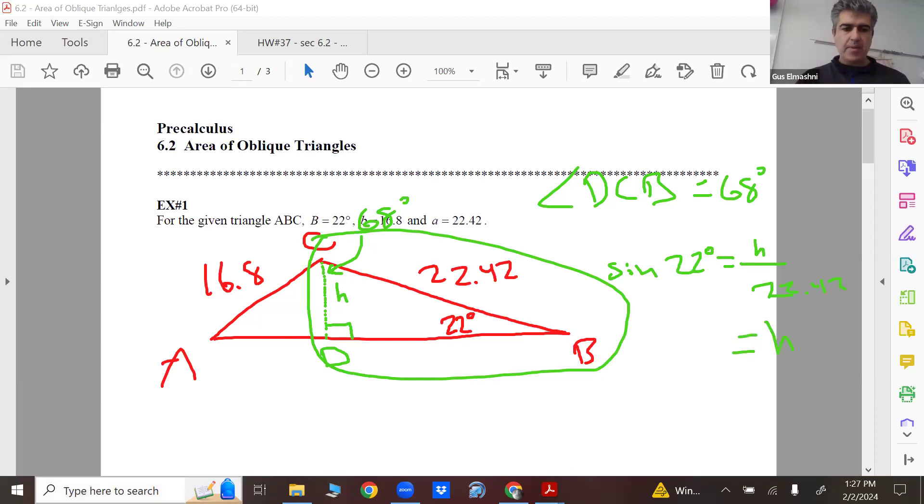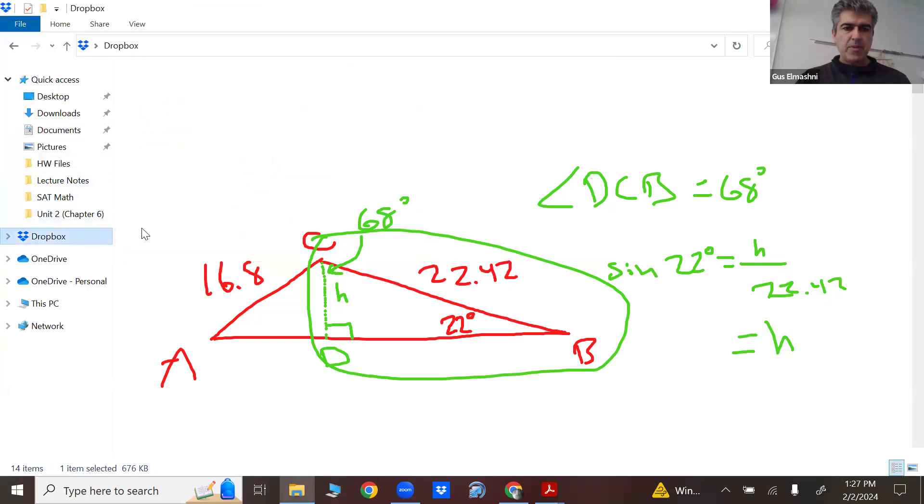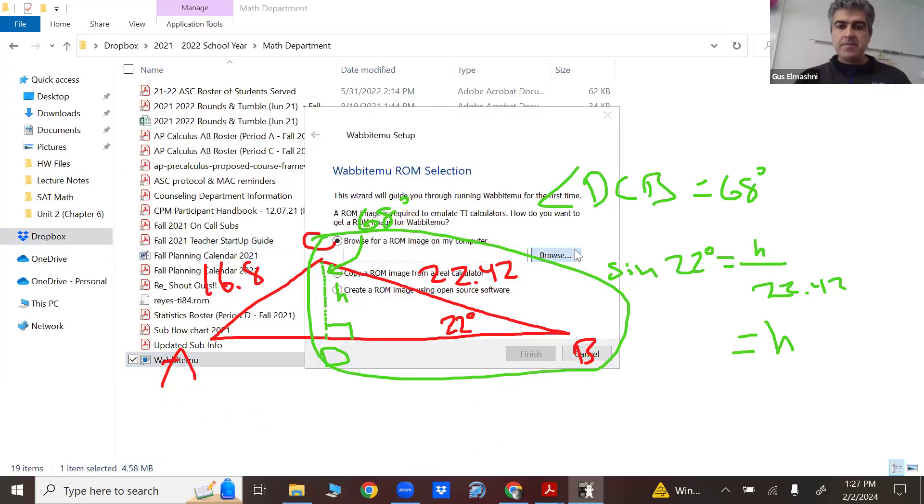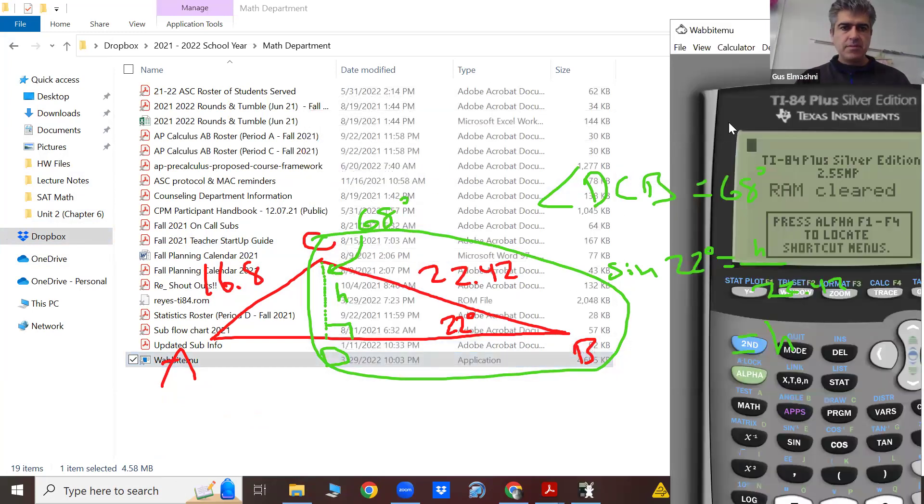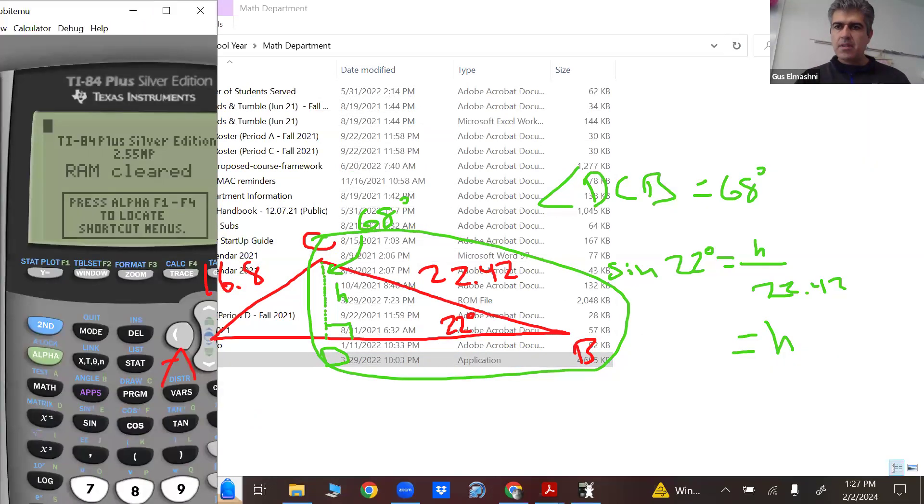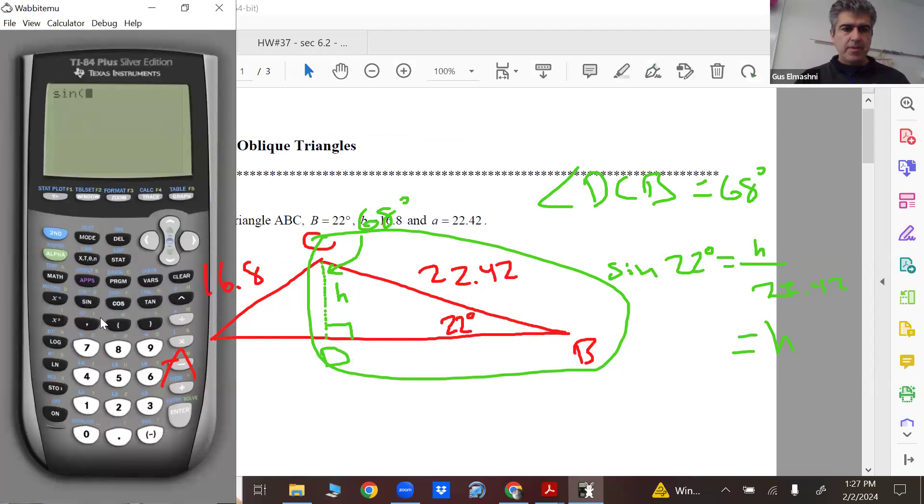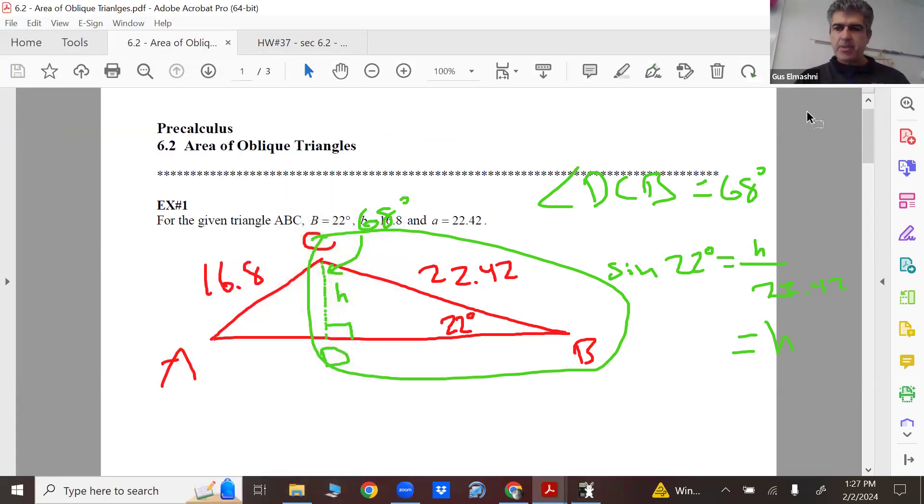I left my calculator in my other room. I do have an online one here. Sine 22, oh boy, we have to be in degree mode, totally. We have no place for radian mode in this unit. Okay, times 22.42. Yeah, I get 8.4. We'll just kind of round a little bit. So 8.4.